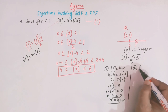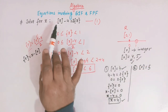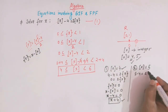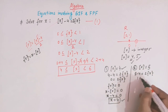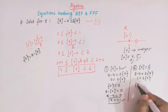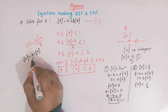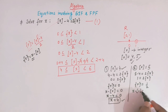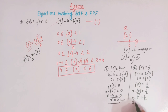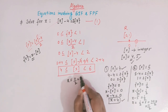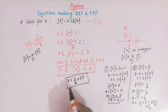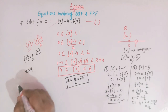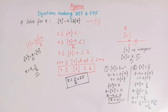Taking the greatest integer of x equal to 5 and substituting: 5 minus 4 equals 2 times the fractional part of x, giving 1 equals 2 times the fractional part of x, so the fractional part of x equals 1/2. Applying the definition: x minus 5 equals 1/2, so x equals 5 plus 1/2 equals 11/2, that is 5.5. The two solutions are x equals 4 and x equals 11/2.